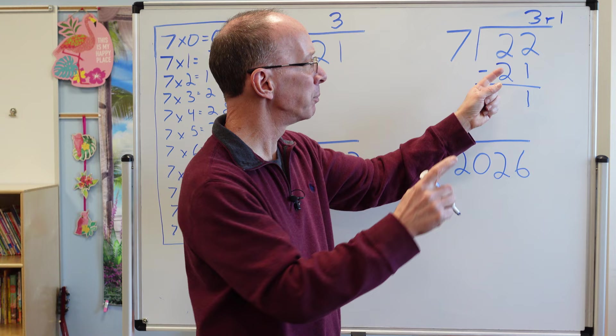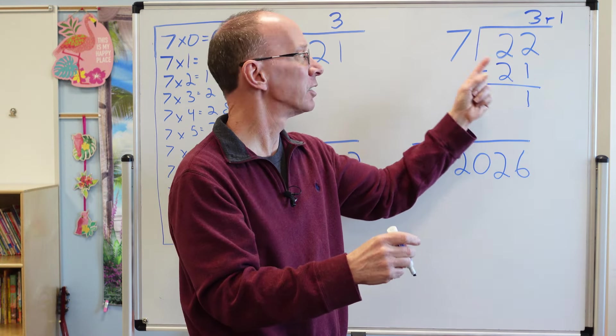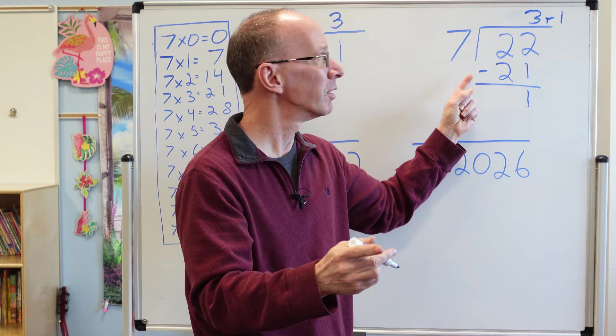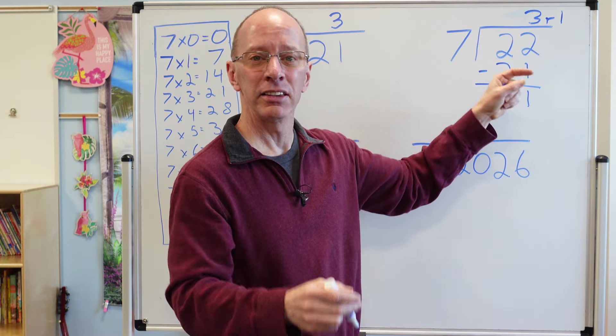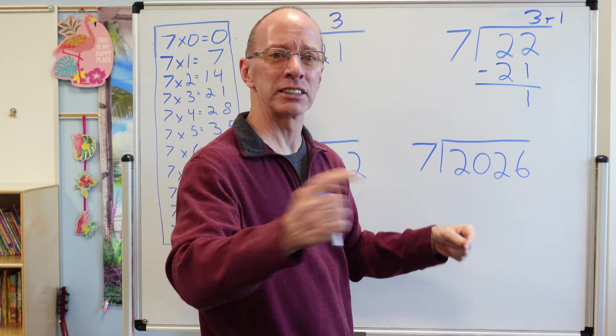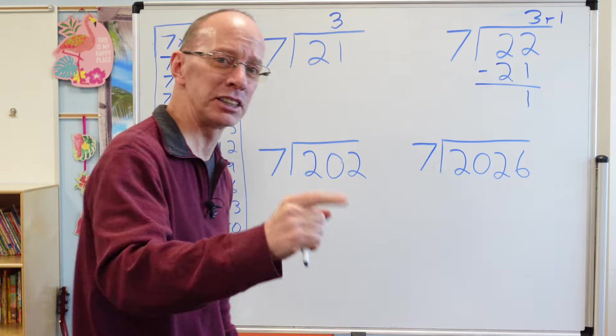So that would be like if I had 22 cookies and I need to divide those between seven people. Each person is going to get three cookies and then there's going to be one left over. You can give that to me. I love cookies. Chocolate chip or peanut butter.